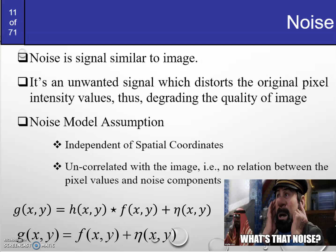Today we are going to study noise models, continuing from the previous two videos. Throughout we have been talking about two things: H, the degradation function which degrades the image through convolution in the spatial domain, and the noise term which is the additive noise. These two things are going to degrade the quality of the image.